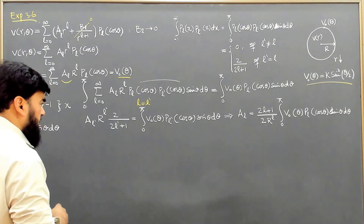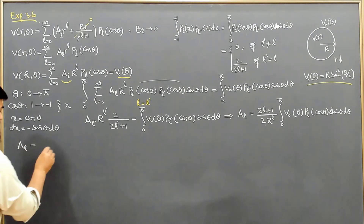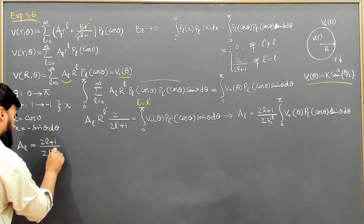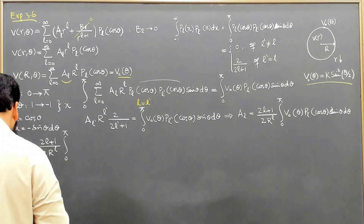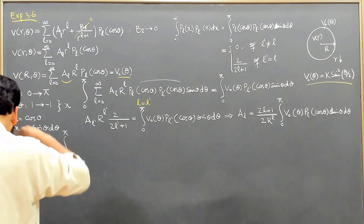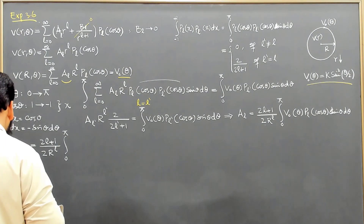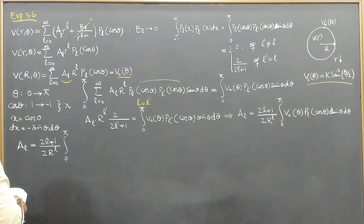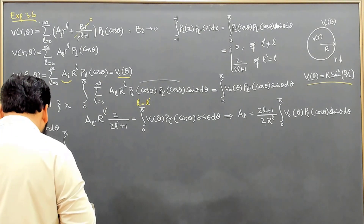Then we can calculate A_l. So A_l in this situation is equal to (2L+1)/2 times R to the power L, integrated from 0 to π. We can do a certain trick here to reduce this equation — we reduce it into P₀ and P₁.